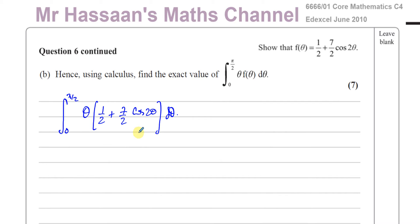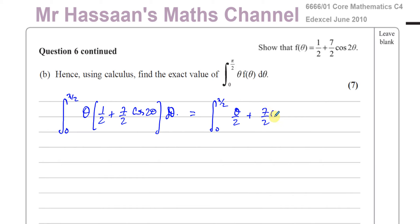Here we have a product of two separate functions, so we can use integration by parts. But to keep things tidy, I'm going to expand the bracket and split it into two separate integrals. Expanding gives us θ/2 plus 7θ/2 cosine 2θ, each of which I will integrate separately with respect to θ.